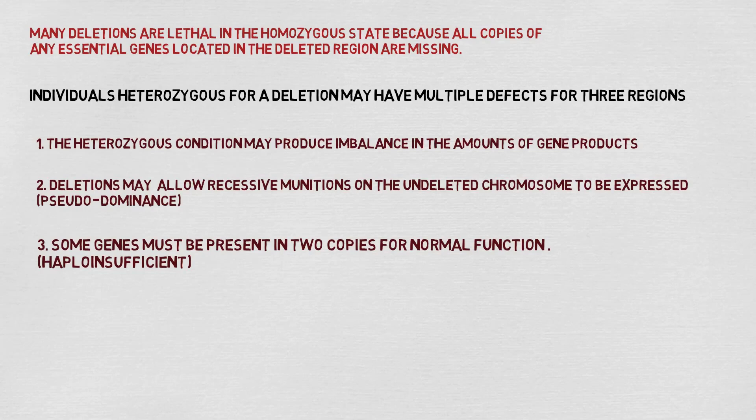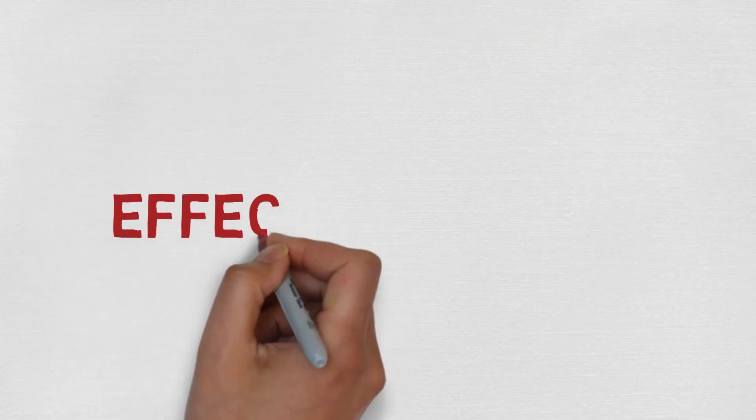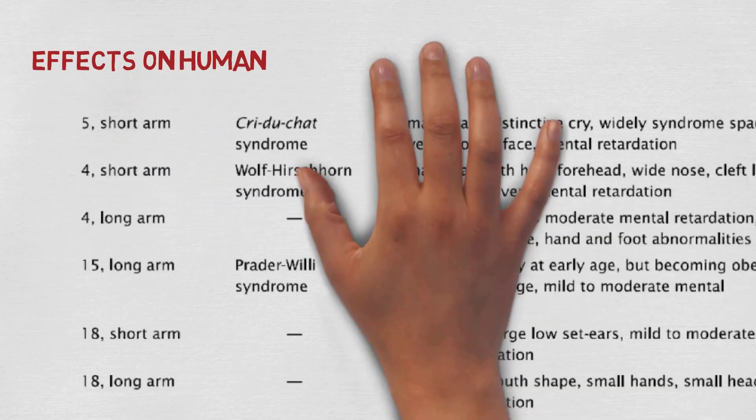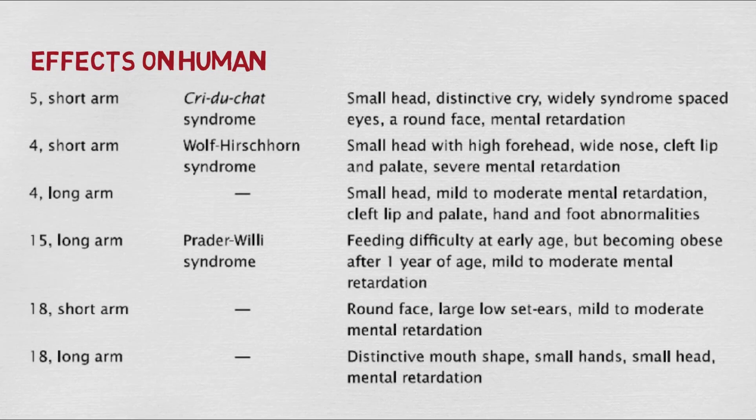Let's see the effect of deletion on humans. In most cases you can see there is mental retardation, abnormal growth, small head, and different organs not developing properly. In most cases the hands and legs are of small size, and the eye positions are abnormal. So in most cases we see mental retardation and abnormal growth of different body parts and organs. You should note all the syndromes and their symptoms from the table.